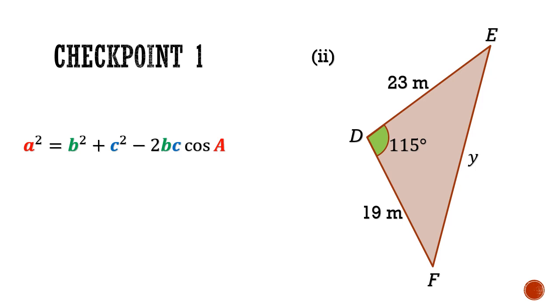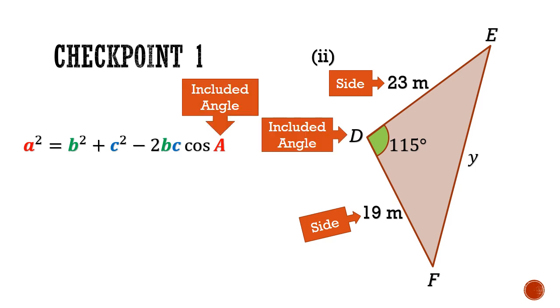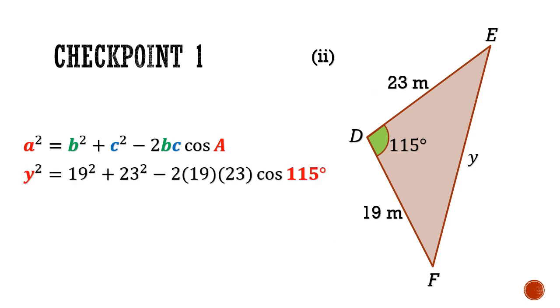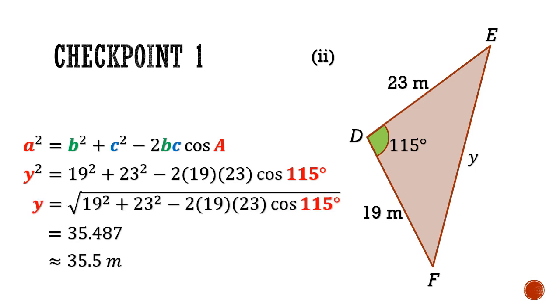In part 2, we can also apply the cosine rule because we have two given sides as well as the angle in between, the included angle. Hence, we can say that y² = 19² + 23² - 2(19)(23) cos 115°. Calculating this, this will give us y = 35.5 meters.